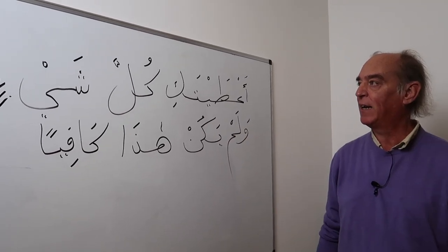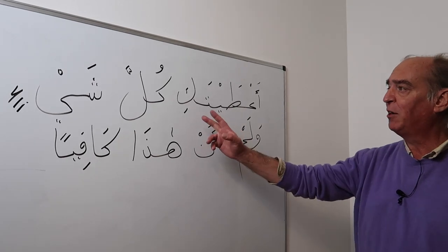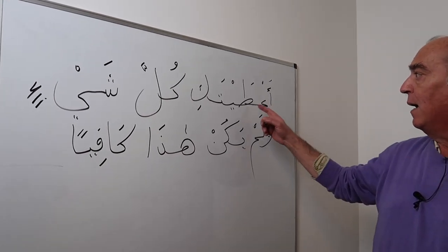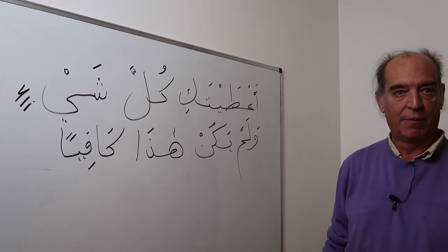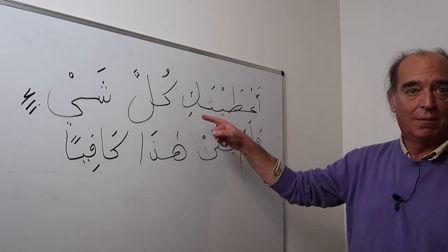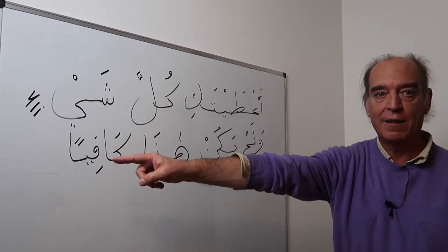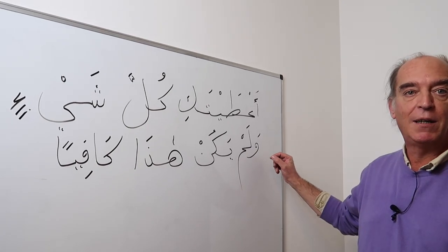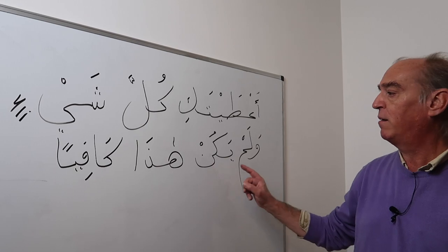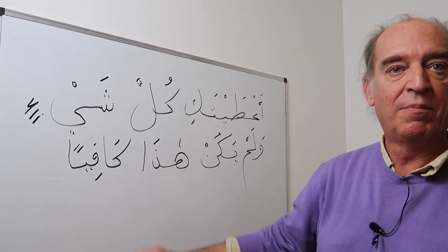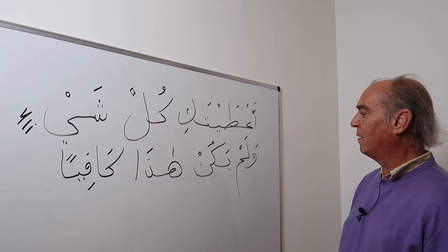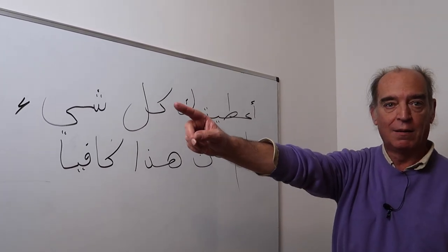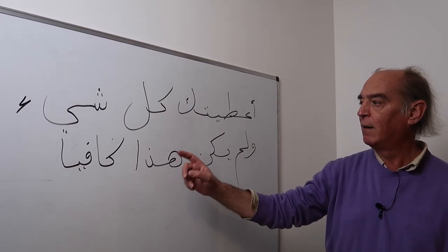Here is a sentence a man with a broken heart might say: a'ataytu ki kulla shayin wa lam yakun hatha kafiyan. A'ata, yu'ati means to give. A'ataytu ki means 'I gave to you,' kulla shayin means 'everything.' So: I gave you everything, and yet it was not enough — a'ataytu ki kulla shayin wa lam yakun hatha kafiyan.